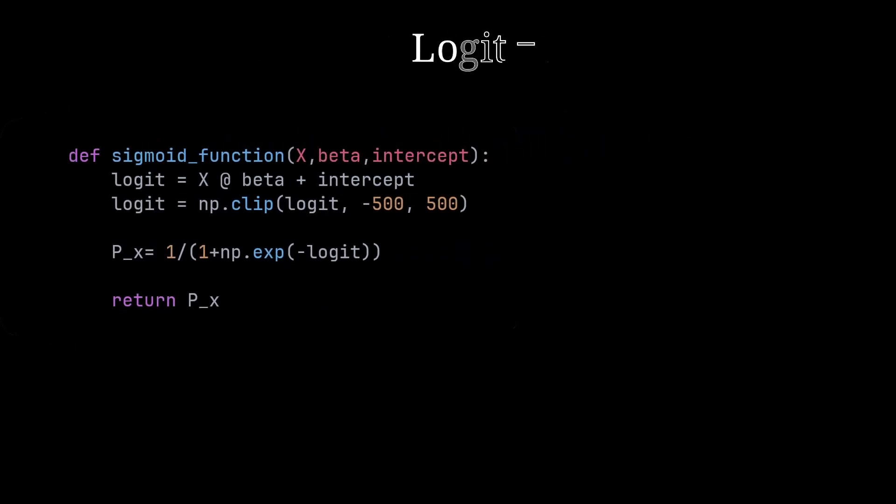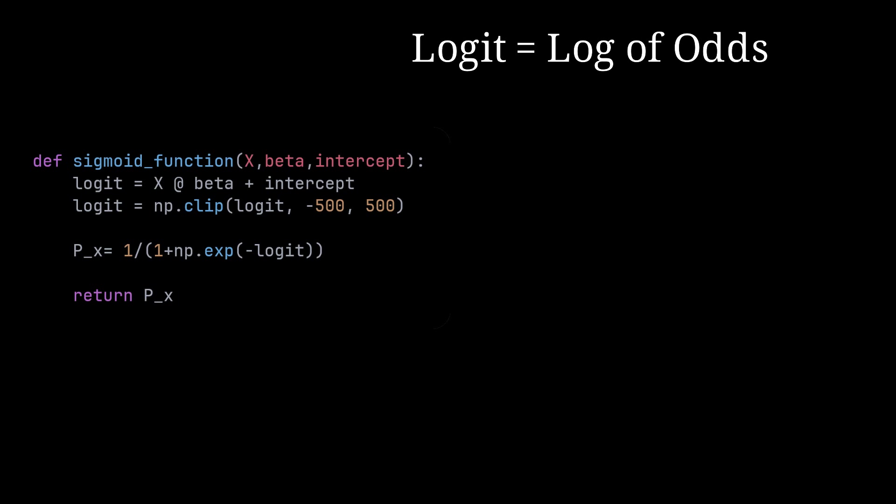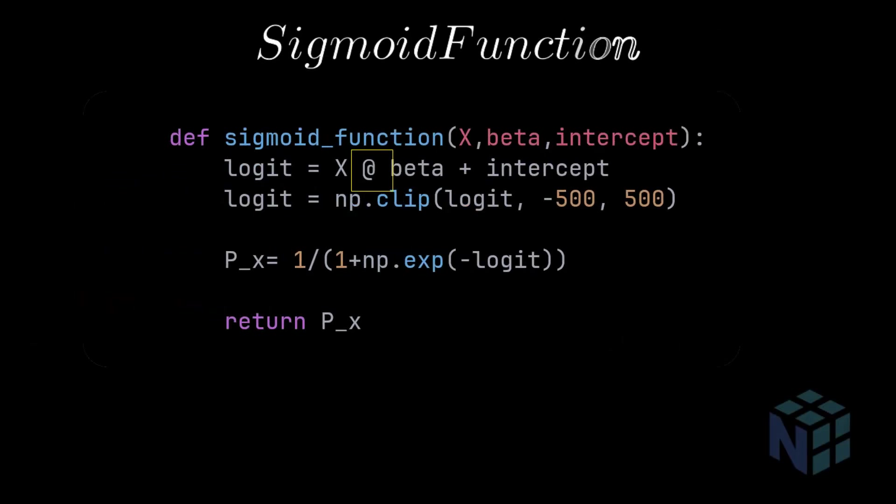First, the sigmoid function. It's pretty straightforward. We calculate the linear equation or logit, which is the log of odds. It's the probability of an event happening divided by the probability of the event not happening. The @ is a NumPy way to multiply matrices, and we use NumPy clip method for numerical stability when the values of the logit are too high. We return the response Y, or also known as P of X, which is the probability of each observation.